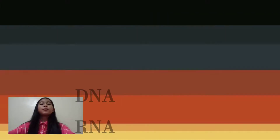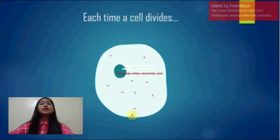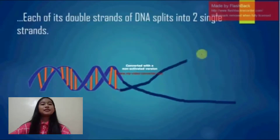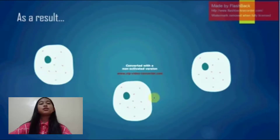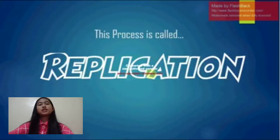First, let's start with replication. Each time a cell divides, each of its double strands of DNA splits into two single strands. Each of these single strands acts as a template for a new strand of complementary DNA. As a result, each new cell has its own complete genome. This process is known as DNA replication.